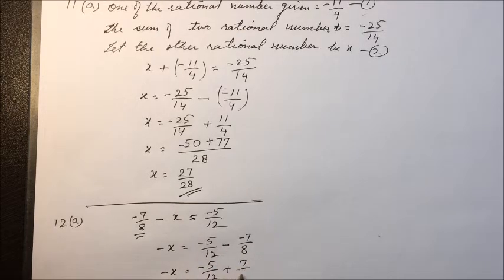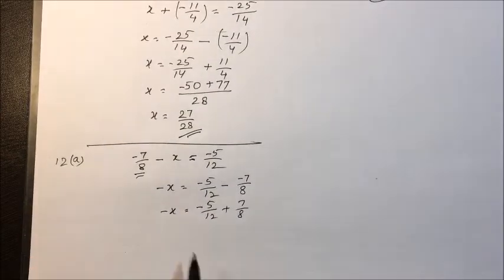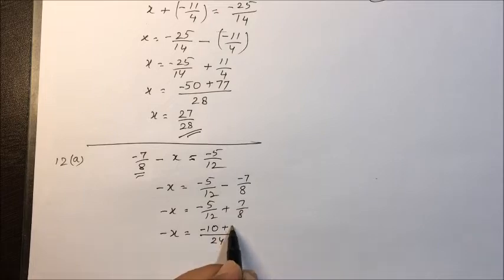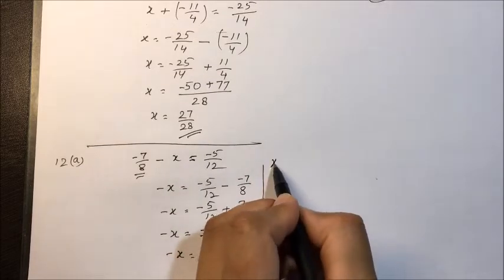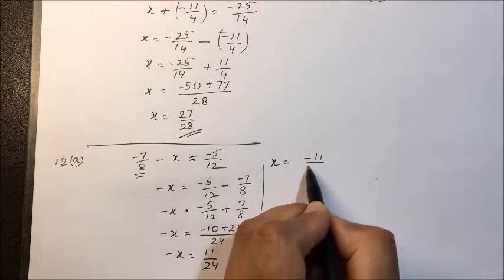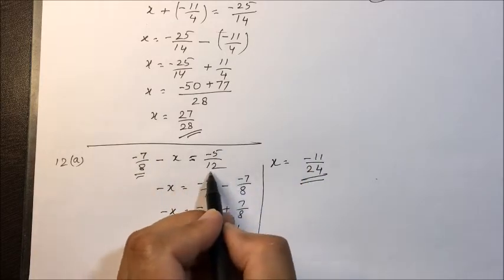Taking LCM as 24, we get minus 10 plus 21, which is 11 upon 24. So minus x equals 11 upon 24, meaning x equals minus 11 upon 24. This is the number which should be subtracted from minus 7 upon 8 to get minus 5 upon 12.